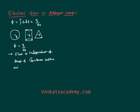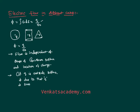Electric flux is also independent of where you have kept the charge inside the Gaussian surface. Wherever you have kept it — if it is within the surface, then that is fine and Gauss's law is valid. The formula is: flux equals 1 by epsilon times total charge. We have also explained that the charge has to be inside the surface. If any charge is outside the surface, then the flux due to that charge in the Gaussian surface is zero.